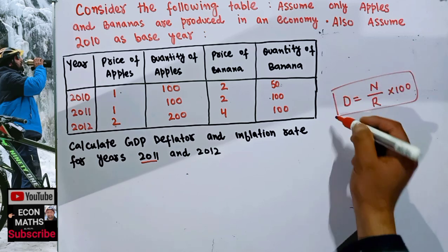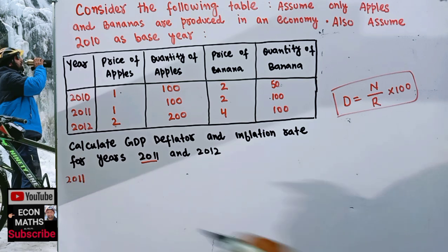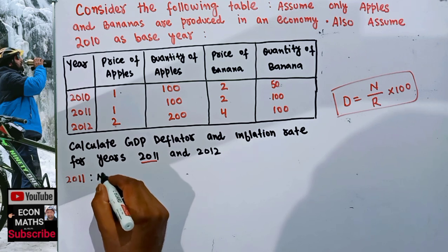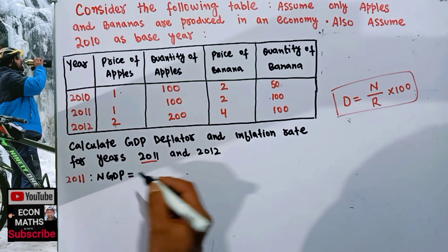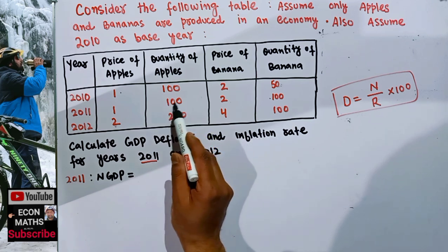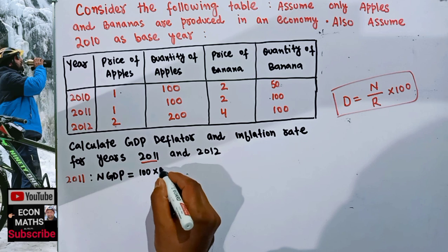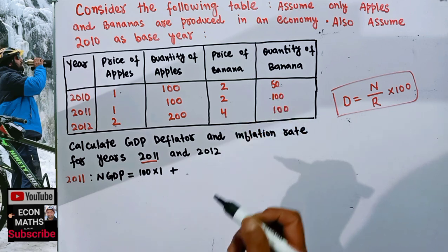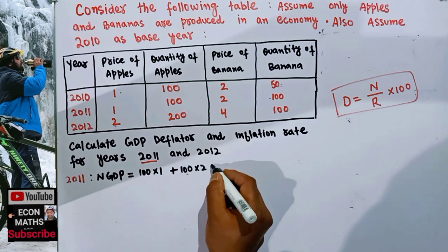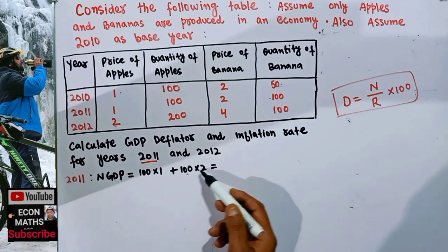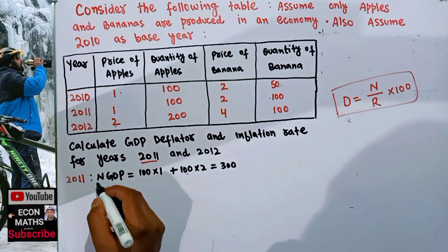For 2011, first we need to find the nominal GDP. Nominal GDP in 2011 is simply the quantity of apples times their price, which is 100 into 1, plus the quantity of bananas times their price, which is 100 into 2. This comes out to 100 plus 200, which equals 300.